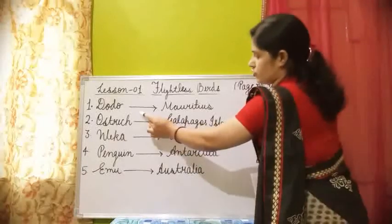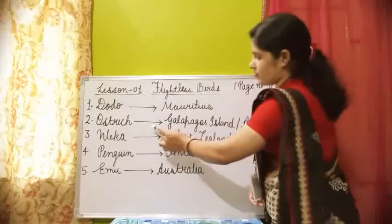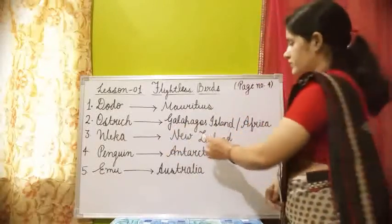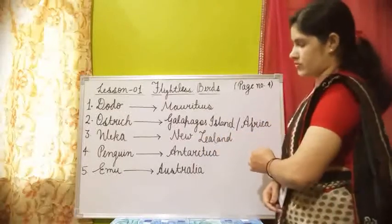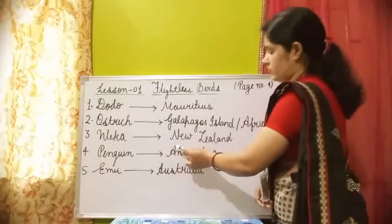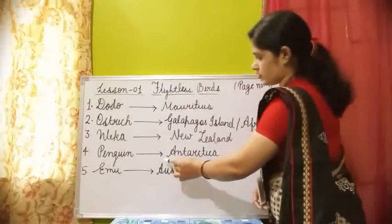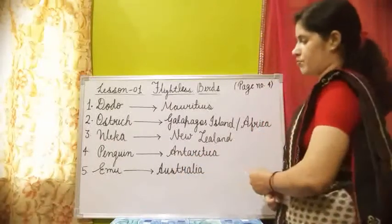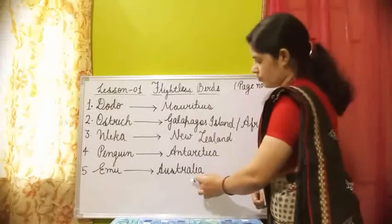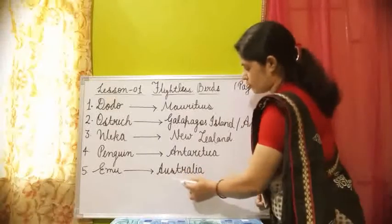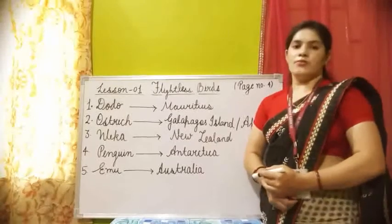The first one is Dodo. Dodo is a native bird of Mauritius. The second one is Ostrich. Ostrich is a native bird of Africa. The third one is Weka. Weka is a native bird of New Zealand. The fourth one is Penguin. Penguin is the native bird of Antarctica. And the fifth one is Emu, the native bird of Australia. Now we will study them one by one.